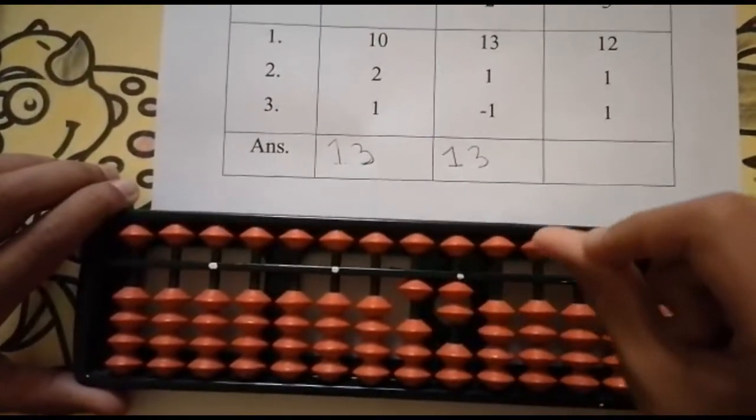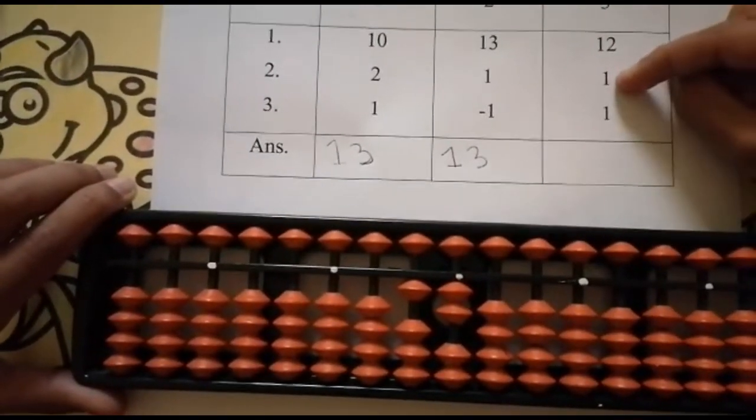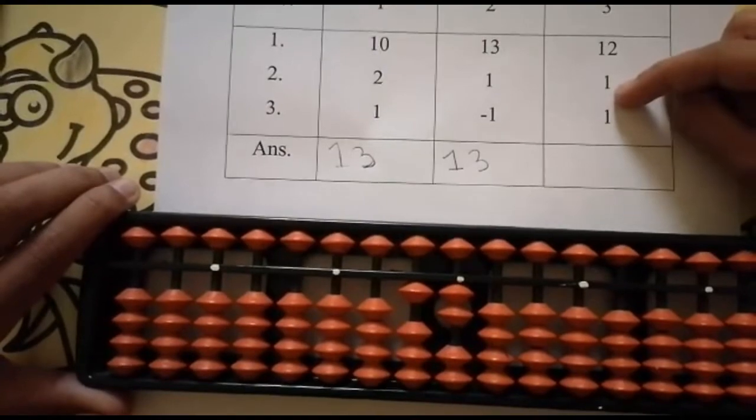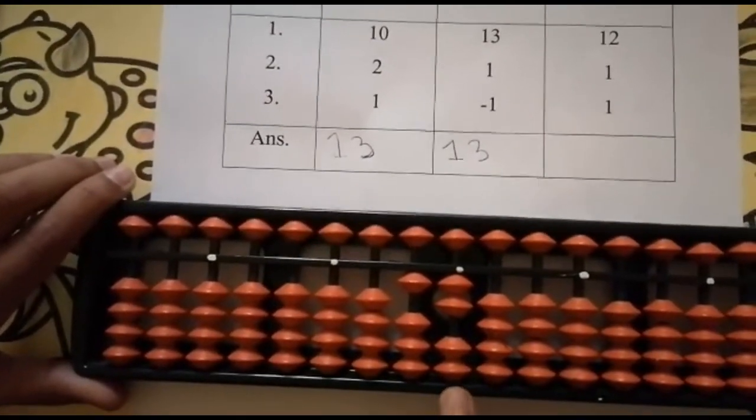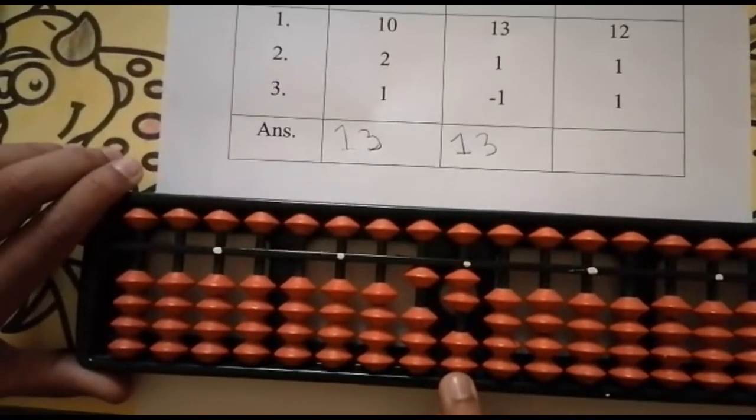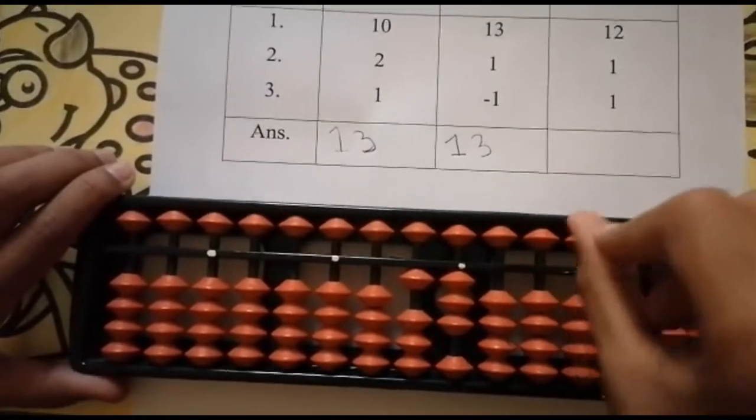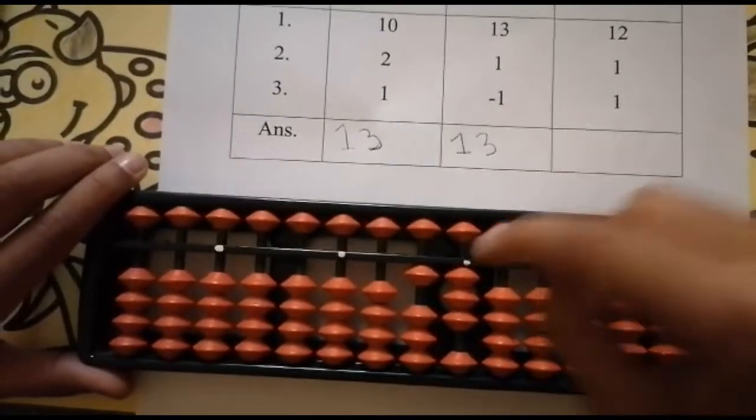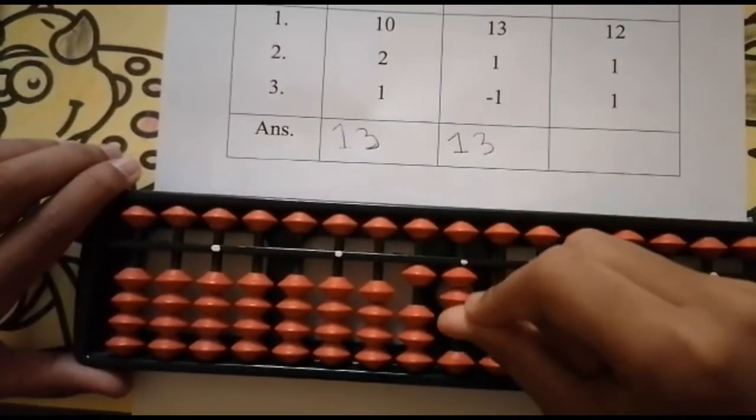So 10, 11, 12. Now add 1. Can we add 1? Yes, it is possible because there are 2 beads remaining. So add 1. Keeping the finger, got 13. 10, 11, 12, 13.